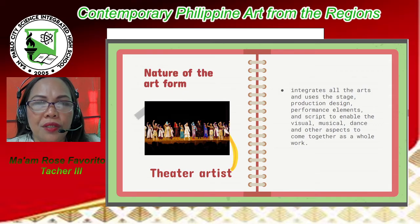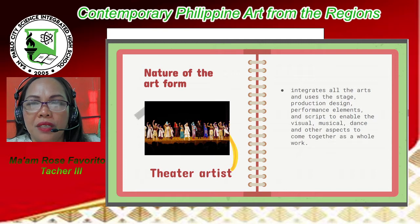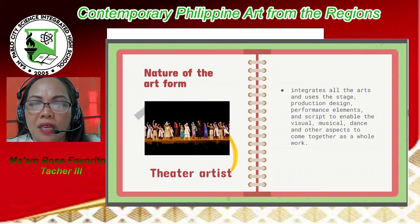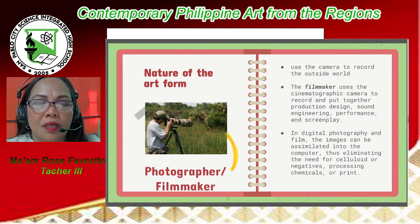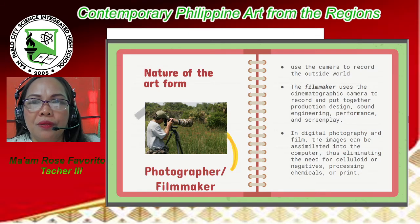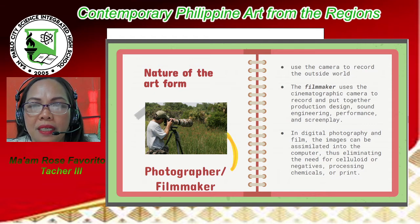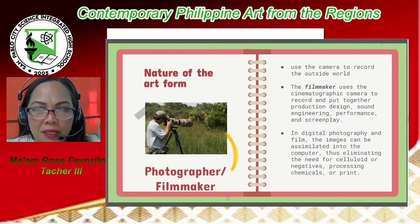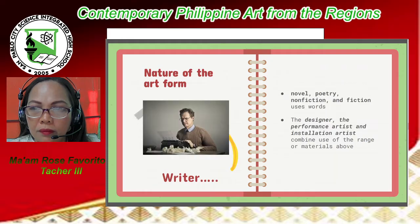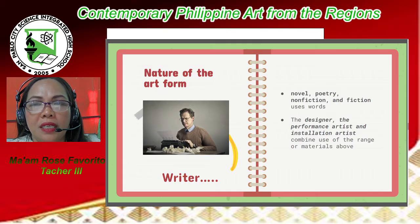A theater artist integrates all the arts and uses the stage, production design, performance elements, and script to enable the visual, musical, dance, and other aspects to come together as a whole work. A photographer uses the camera to record the outside world. The filmmaker uses the cinematographic camera to record and combine production design, sound, engineering, performance, and screenplay. In digital photography and film, images can be assimilated into the computer, eliminating the need for celluloid or negatives and processing chemistry. The writer — novelist, poet, and fiction writer — uses words. Allied arts like designers, performance artists, and installation artists combine a range of the materials above.